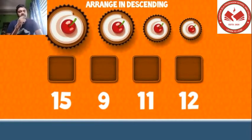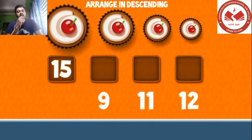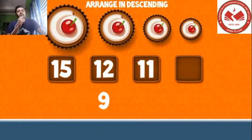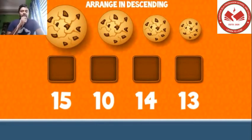Here we have to arrange numbers from greater to smaller. So let's put 9 in the last box. This is called arrangement of numbers from greater to smaller. Here we have a complete series with two-digit numbers.